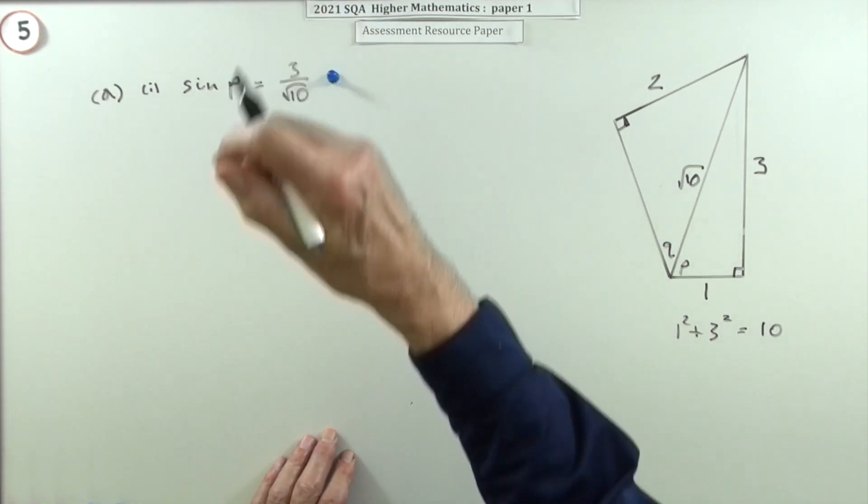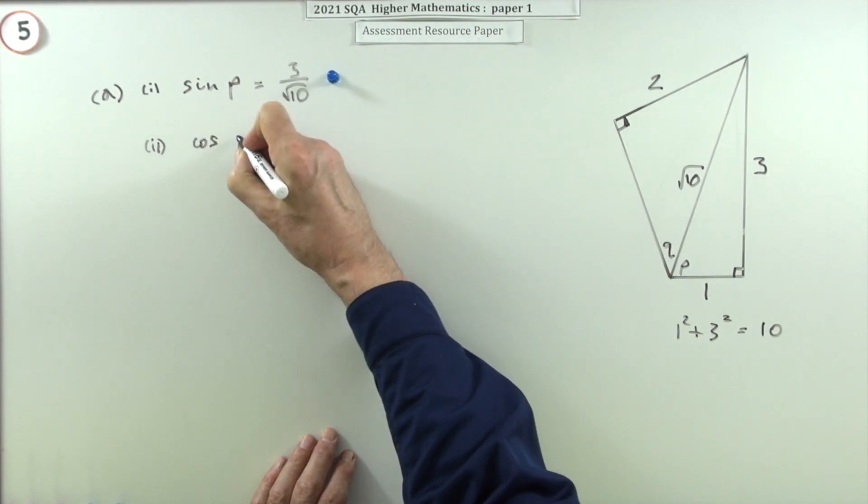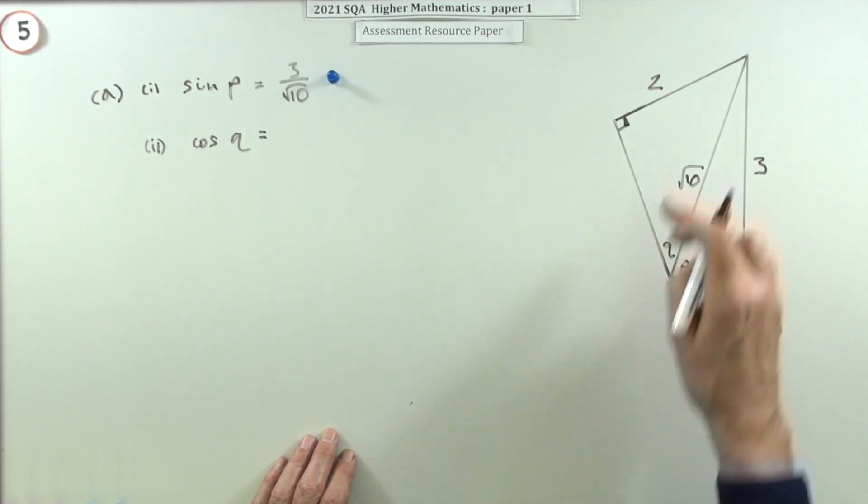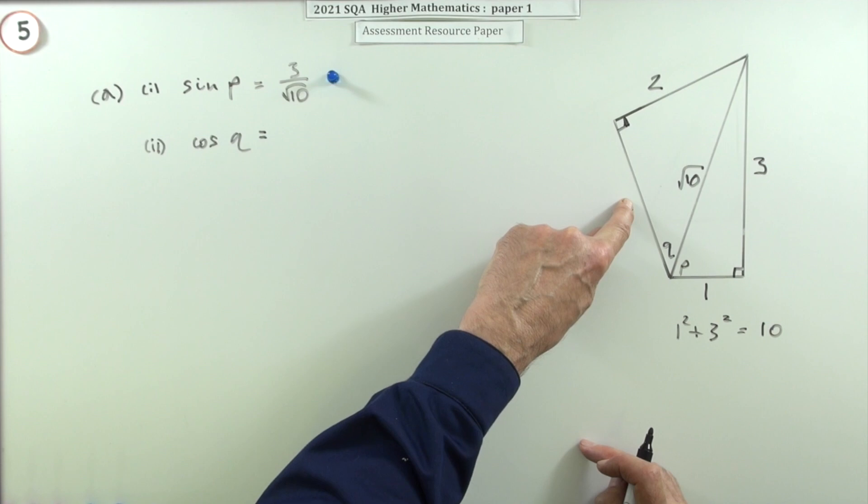Part two said what's the cosine of Q? Well, now I've got two parts for Q because I've now got that √10, but I need this third side here. So again, I'll do another wee bit of Pythagoras.